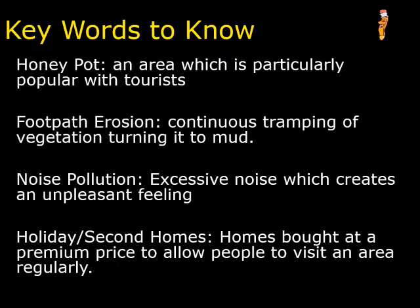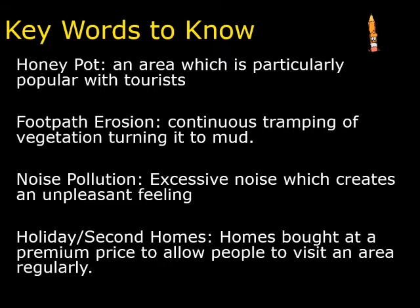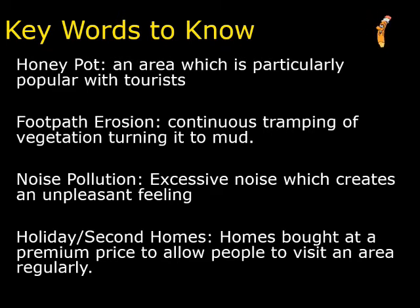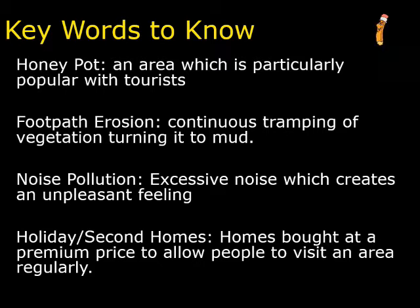First up, some key words you'll need to know for this lesson. Honey pots: a honey pot is an area which is particularly popular with tourists, named after the fact that flies go around the honey pot. The second one is footpath erosion: this is the continuous tramping of vegetation turning out to mud — what the wee girl was doing.